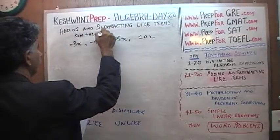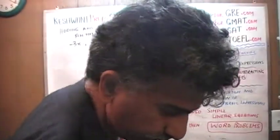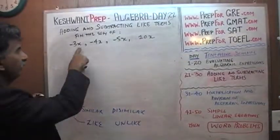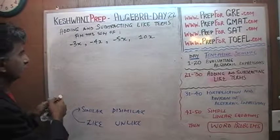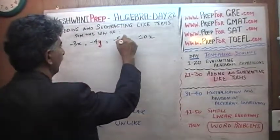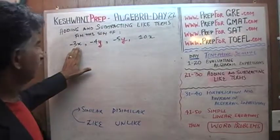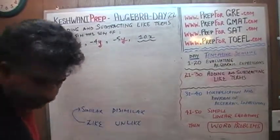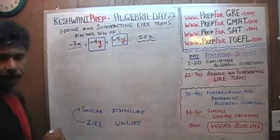Do you notice something? It's the same as before. Now, what happens if two of the terms were unlike? Here they are all like terms because they all contain x and nothing else. All we have to do is add up their coefficients. But what if this x were changed to y? Now we have to talk about adding the like terms — these two involve x and are like terms, and these two involve y and are like terms.